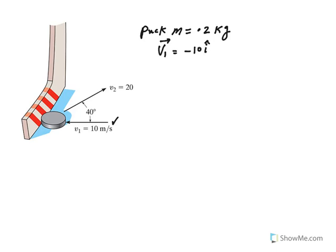I think it's easier to solve this problem vectorially. After the strike by the hockey stick, the velocity v2 after impact is 20 meters per second in this direction at 40 degrees, which vectorially you can write as 20cos(40°)î + 20sin(40°)ĵ.